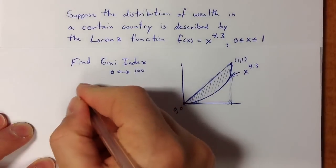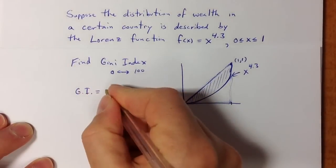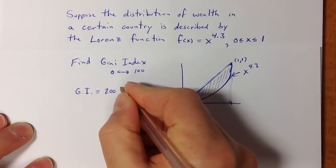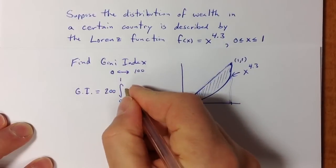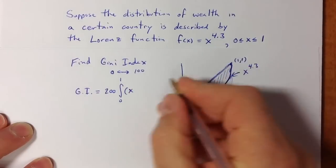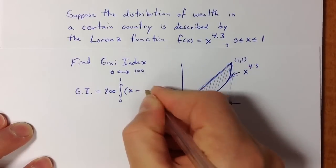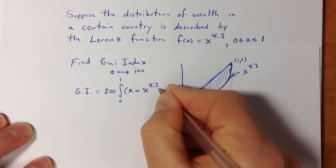The Gini index equals 200 times the integral from 0 to 1 of x, representing the line for complete equality, minus the given Lorenz function, in this case x^4.3.